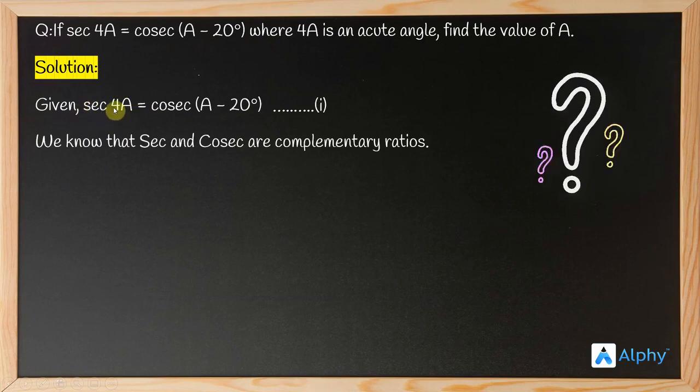We have sec 4A. How do we represent this as cosec? We can write sec 4A equals cosec(90 degrees minus 4A). Let this be equation 2.